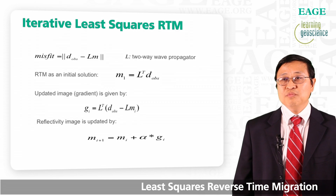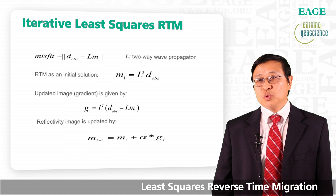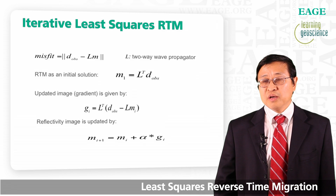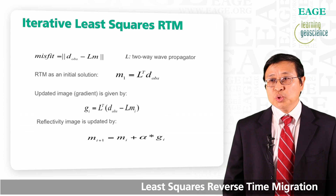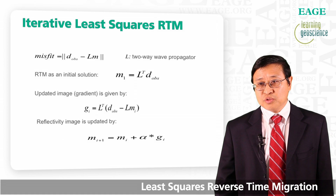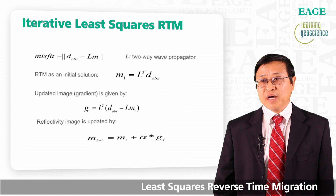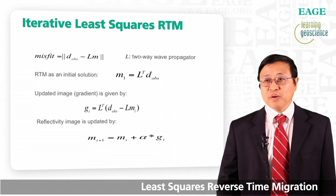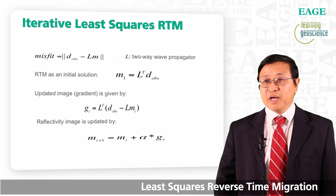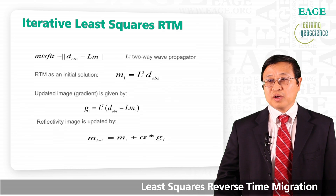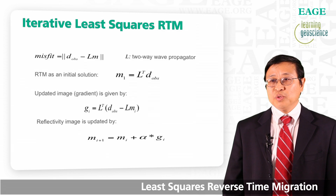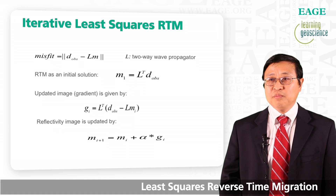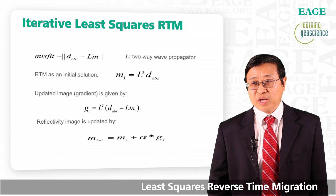In our implementation of least squares RTM, we choose an iterative gradient-based local search algorithm, where L is a two-way wave propagator. In our iterative solution, the initial solution is just a regular RTM, where L-transpose is the RTM operator. However, least squares RTM does not stop at the regular RTM image — it goes on with an iterative image updating loop. We use the migration image as the reflectivity image, perform forward modeling to get LM, then combined with input data, you get the data residual.